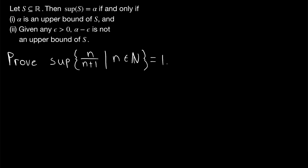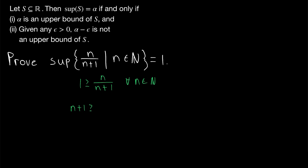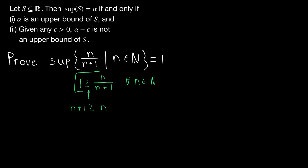The rule of thumb for real analysis: if you don't know where to start, start with your result. We want to prove that 1 is an upper bound of s, so we want to prove that 1 is greater than or equal to n over n plus 1 for every natural number n. This seems intuitively obvious — you can't divide one number by a bigger number and get something bigger than 1. If we multiply both sides of this inequality by n plus 1, we get that n plus 1 is greater than or equal to n, which we know is true. So we start there and divide both sides by n plus 1.